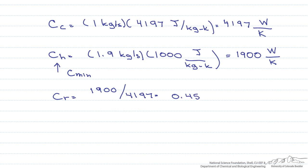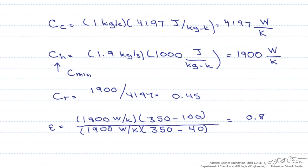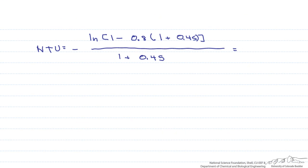The next thing we do is calculate our effectiveness. And when we calculate this, we find that we have an effectiveness of 0.8. Now we use that effectiveness to find our NTU. However, when we try to calculate our NTU, what we find out is that this does not exist.